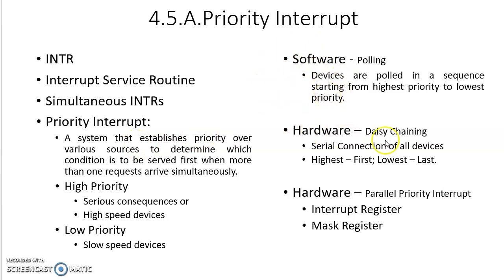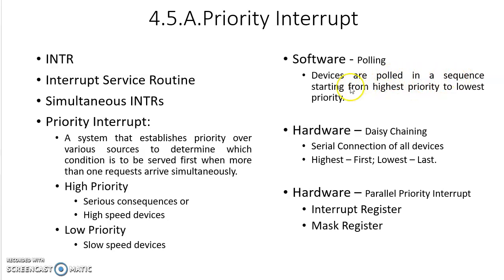This priority interrupt concept can be executed in two ways: either using a software method or using hardware. We will look at one software method and two hardware methods. The one software method is polling. In polling, all the devices that are connected will be polled in a sequence starting from highest priority to lowest priority.